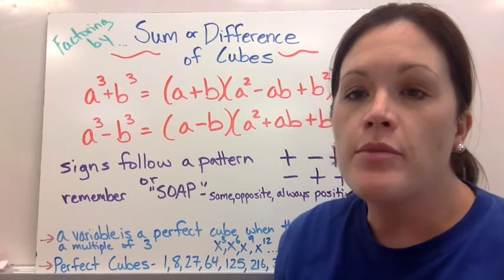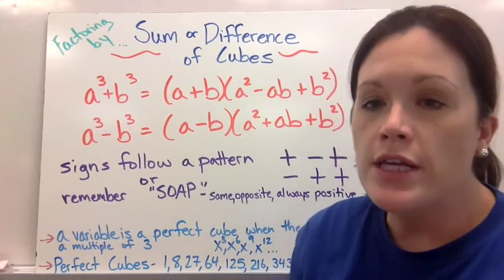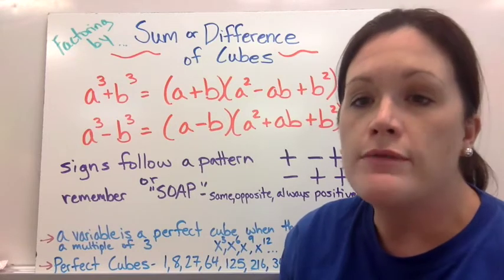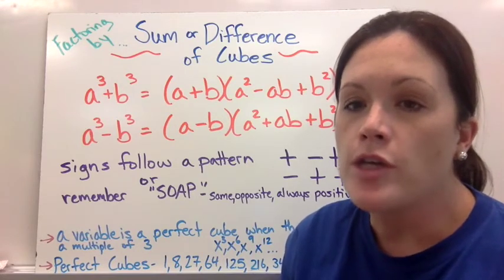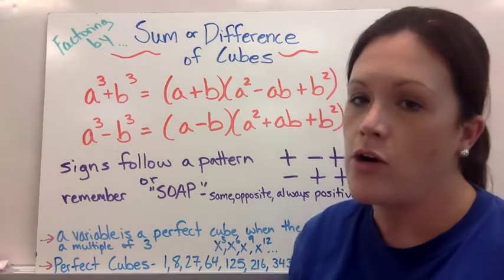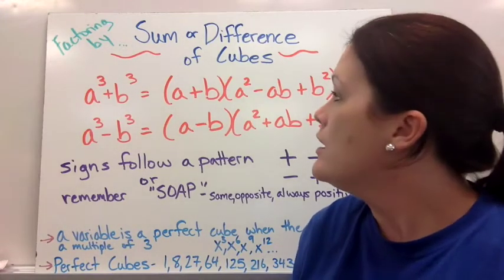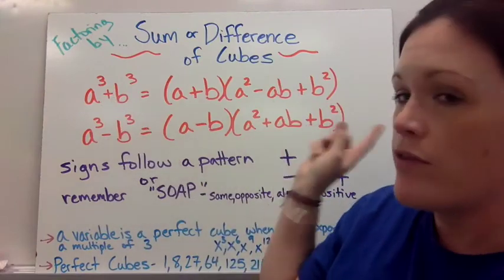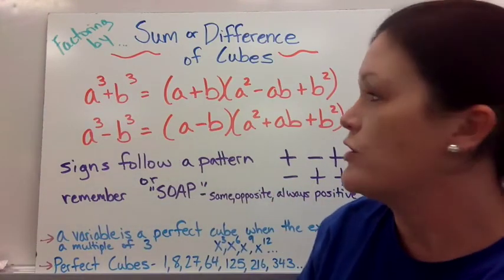Let's talk about how to factor a sum or difference of cubes. You need this type of factoring when you have two terms and they're both a perfect cube, and they can be added or subtracted. So what I put here in red are our general formulas. This is just the basic setup of the pattern that we use to factor these.